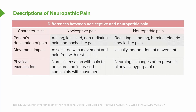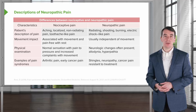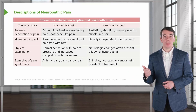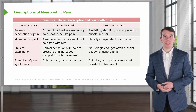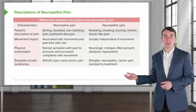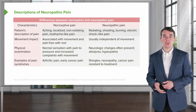On physical examination, for nociceptive pain we tend to see normal sensation with increased complaints with movement — moving a passive joint that is painful will cause it to hurt worse, but just touching the skin will not elicit a painful response. With neuropathic pain, neurologic changes are often present: patients may have reduced sensation, anesthesia over an area, allodynia where significant pain is reported just by touching the skin, or hyperpathia. Examples of nociceptive pain include arthritic pain or early cancer pain; examples of neuropathic pain conditions include shingles, radiculopathy, thalamic pain syndrome, and postherpetic neuralgia.